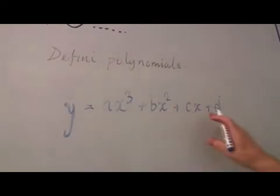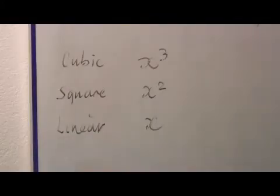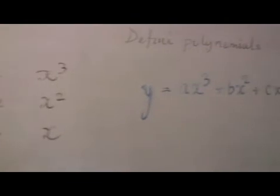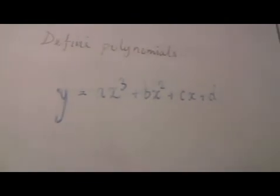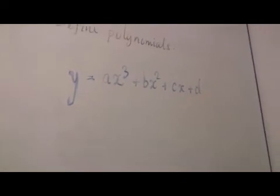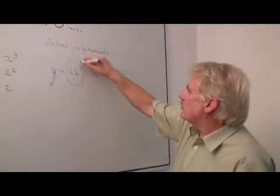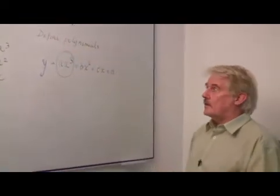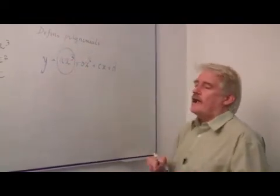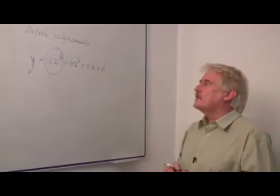Each of these terms has a different part relating to x, a different index regarding x. So here, what we have to do is decide whether it's a cubic equation, a squared equation, or a linear equation. The polynomial is defined by the highest order of x. So x cubed, this is a cubic, a degree 3 polynomial.